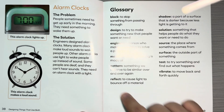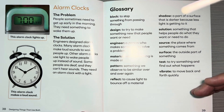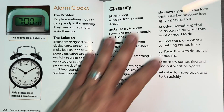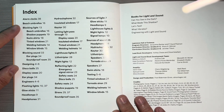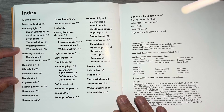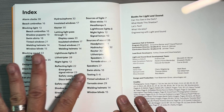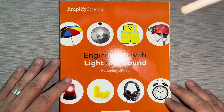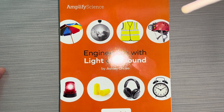This is the glossary. The glossary lists important vocabulary words that have been mentioned in the book, and it gives you their definition. This is an important feature of a nonfiction text. And this is an index. The index lists many important words that were listed in the book. It doesn't give you a definition, but it tells you what pages in the book these words were mentioned on. So the index can also be a very useful feature of a nonfiction text. This book is Engineering with Light and Sound from Amplify Science. I hope you loved it.